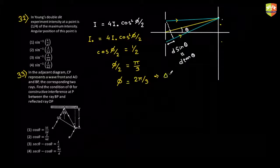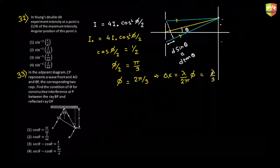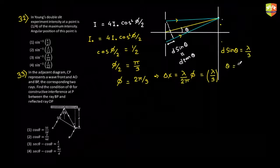The phase difference should be equal to 2π/3. If phase difference is 2π/3, the path difference equals (λ/2π) × phase difference = λ/3. Now equating d·sinθ = λ/3, you get θ = sin⁻¹(λ/3d). That's why option 3 is correct.